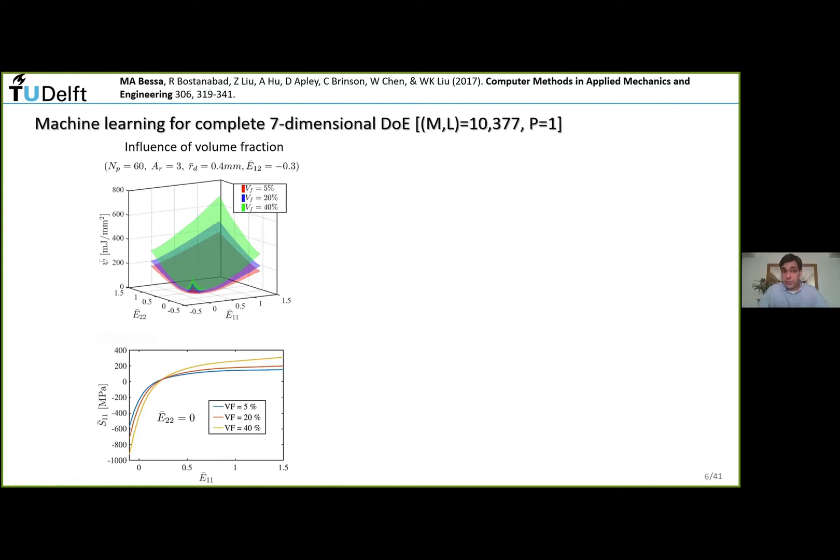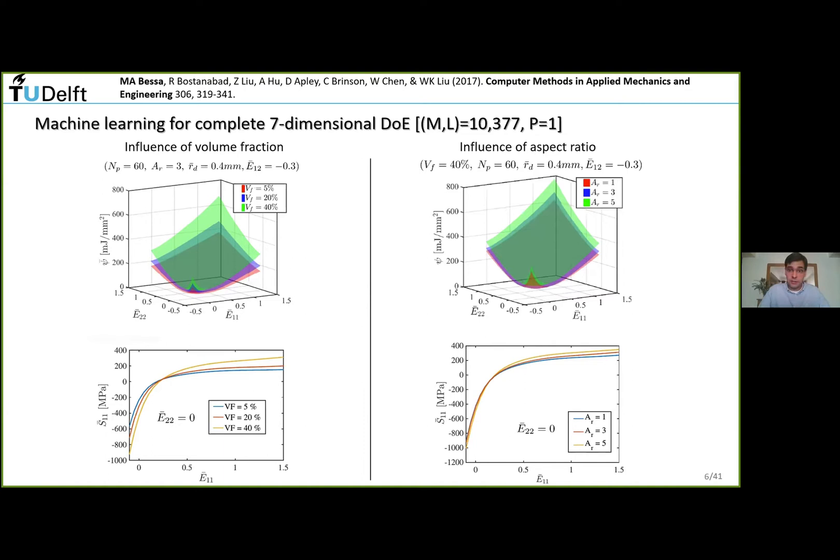This means you could reduce the size of your input space and define the material behavior with fewer descriptors. As usual, you can plot the evolution of error as you refine the design space. If you have more and more input points, your error of approximation for the material behavior keeps going down.